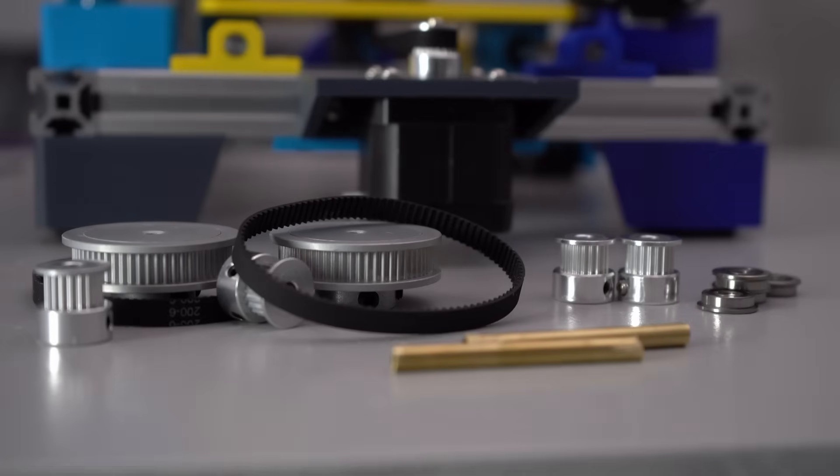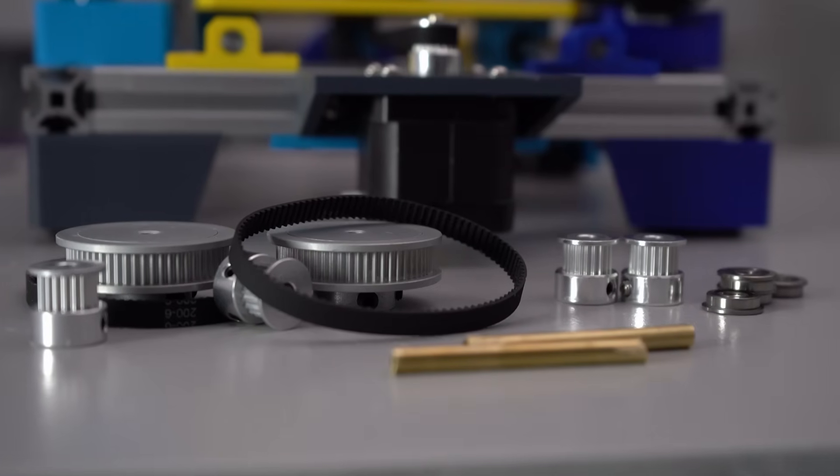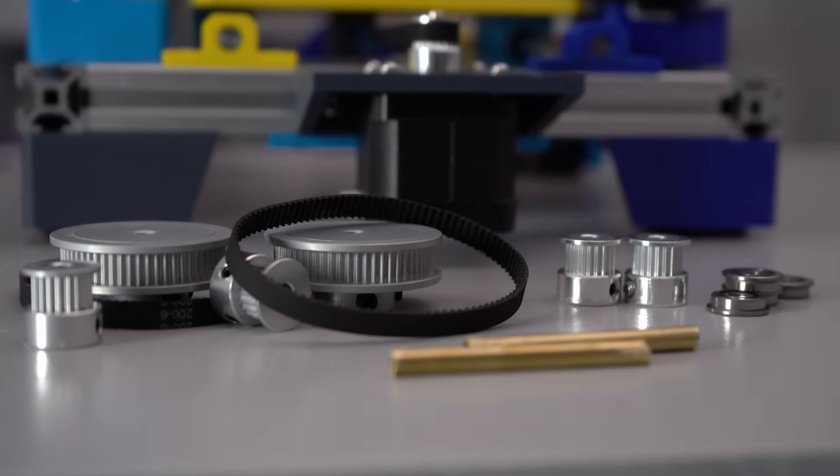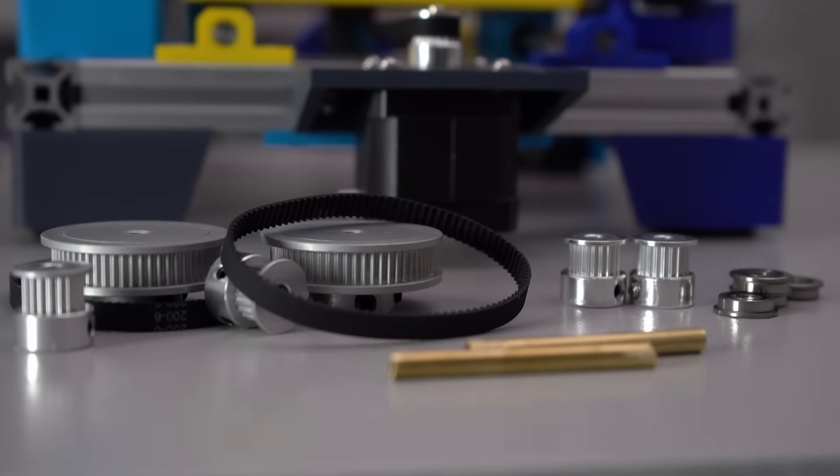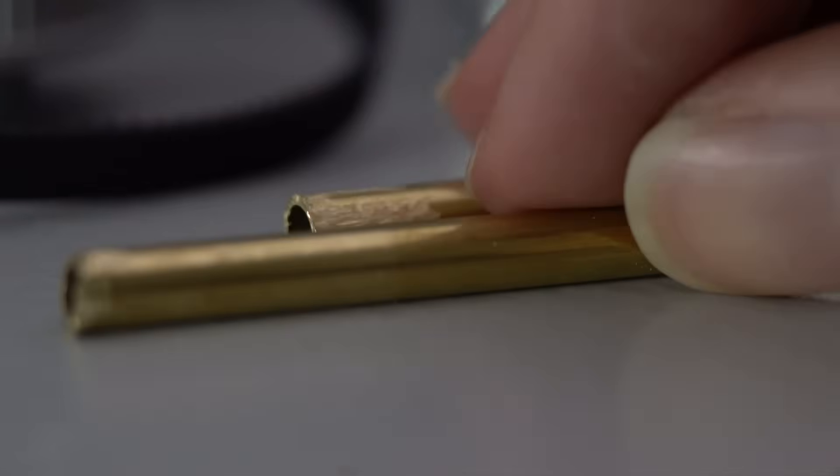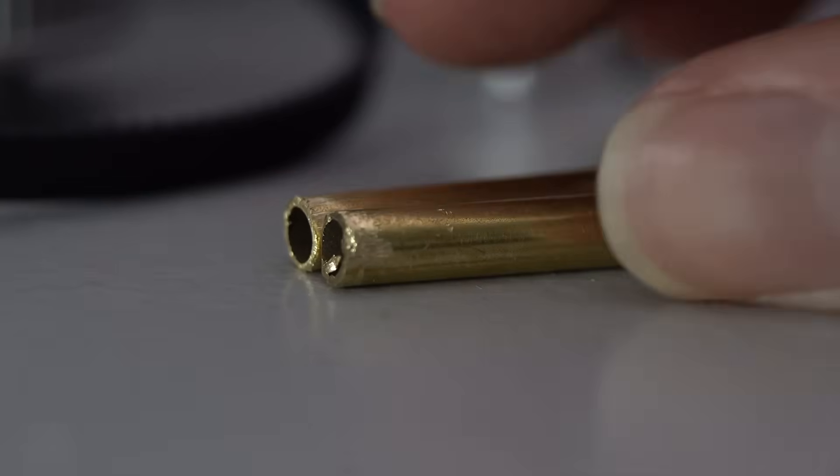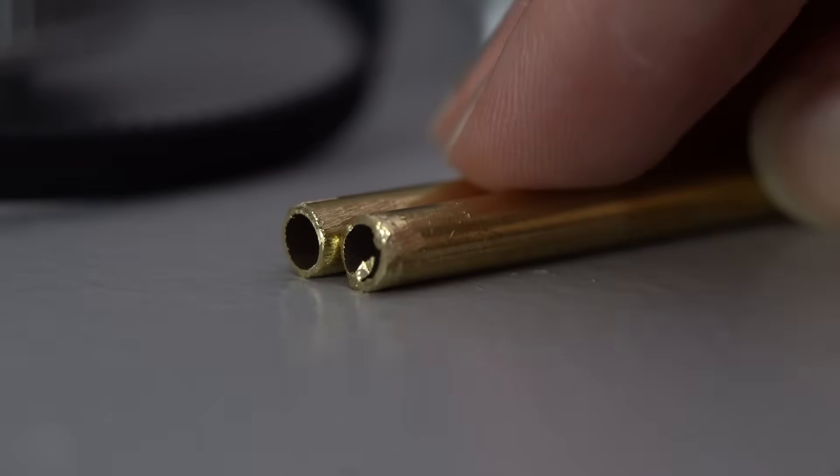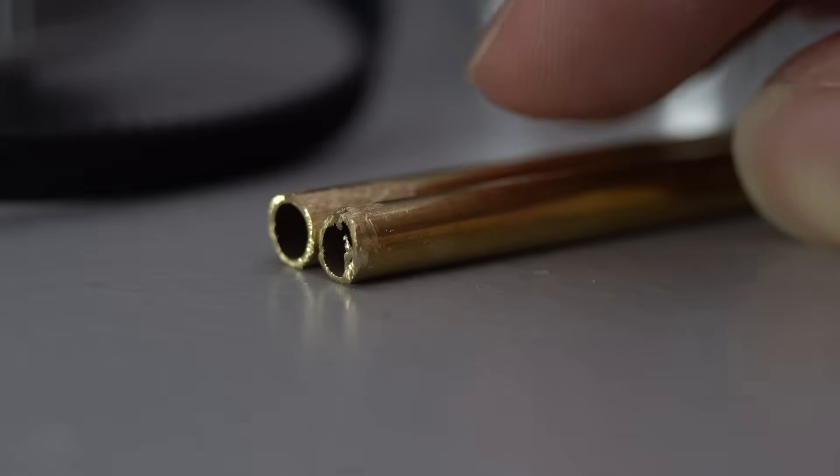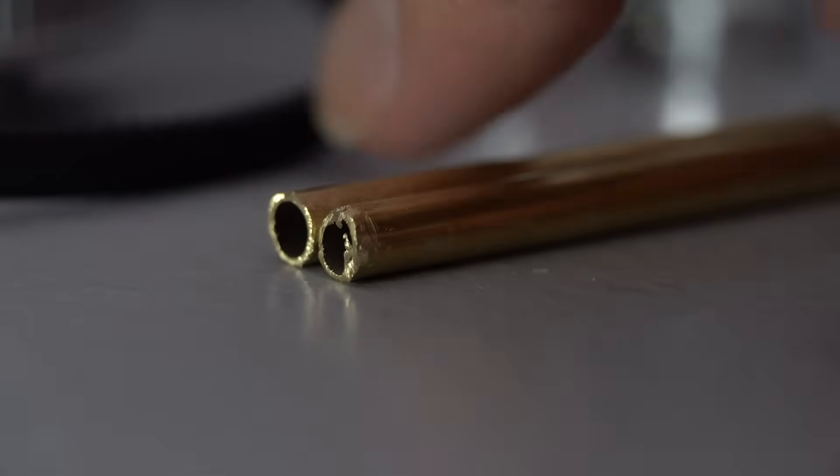For the Z-axis, you're going to need 60-tooth pulleys, 20-tooth pulleys, the belt loops, some F695 bearings, as well as metal shafts. At the time I was building, the bill of materials still called for one brass rod, which you would then cut and sand down yourself. Now, however, that part has been replaced with dedicated 5mm steel shafts, which are far easier to work with.